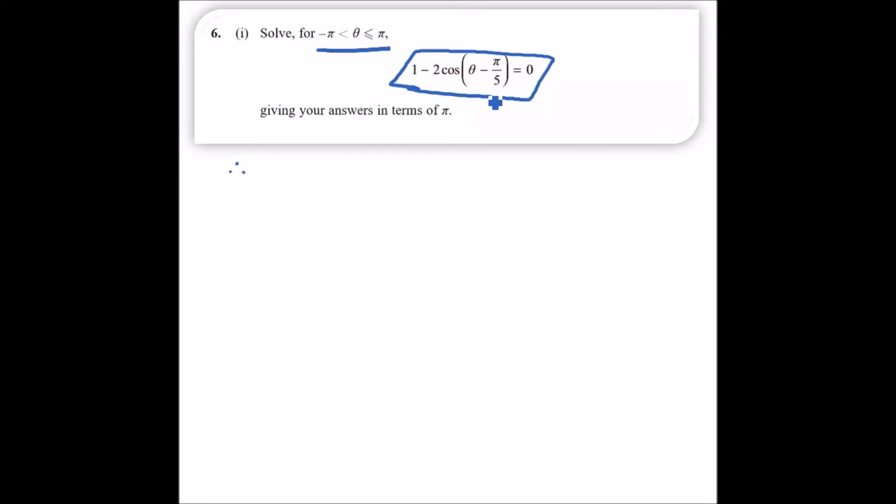Let's make cos the subject. We're going to have 2 cos(θ - π/5) = 1. Let's divide by 2, so we'll be left with cos(θ - π/5) = 1/2.